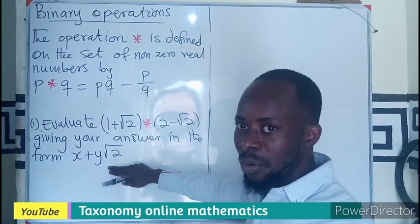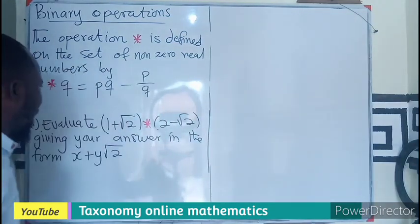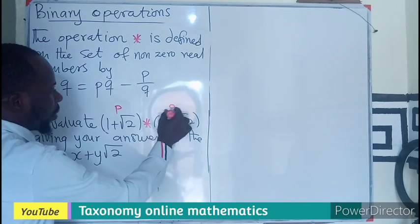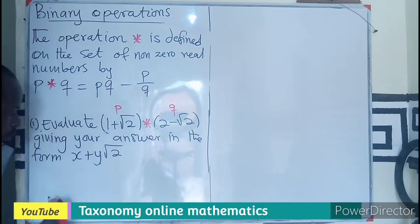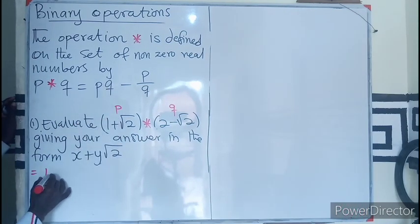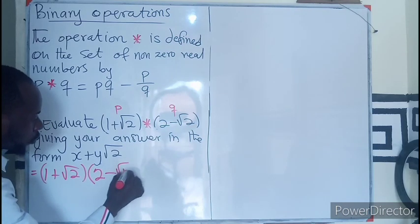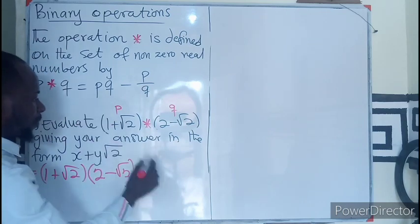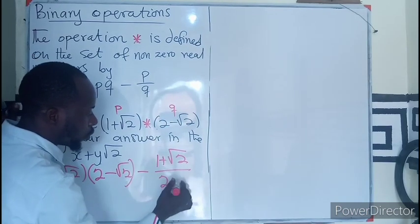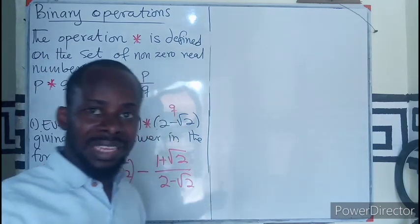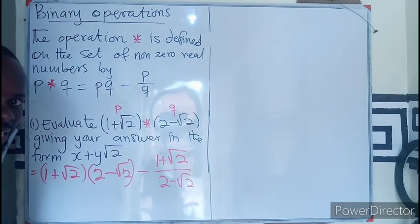After solving, your answer will be presented in the form of a variable or a number plus a number root two. So to kick start this, we identify our p and our q. The first term p is one plus root two, and q is two minus root two. We are only substituting the values of p and q into the binary operator definition stated on the left and defined on the right.